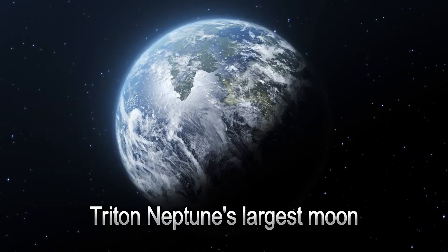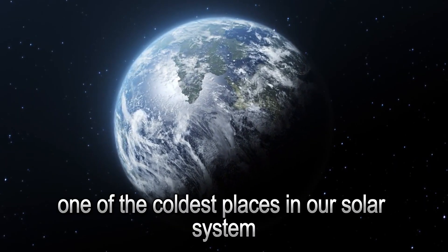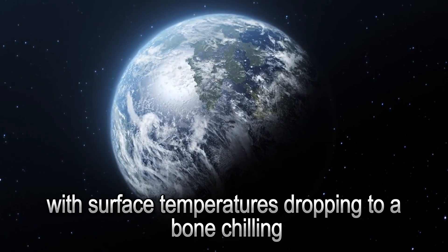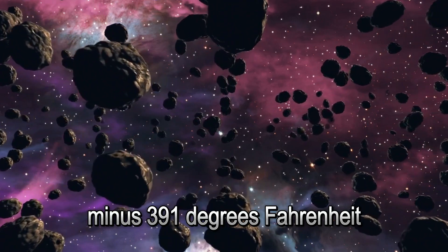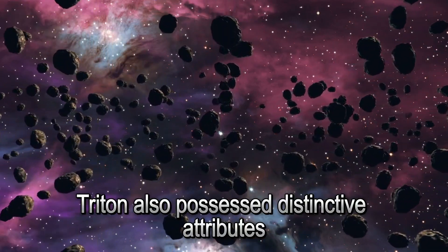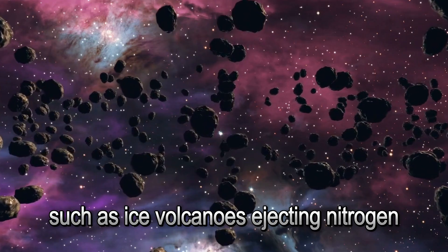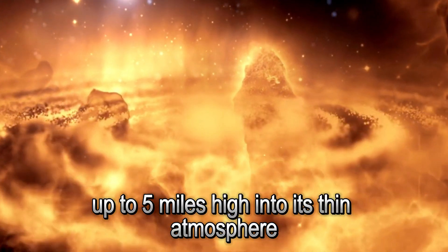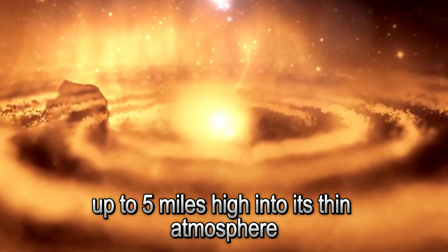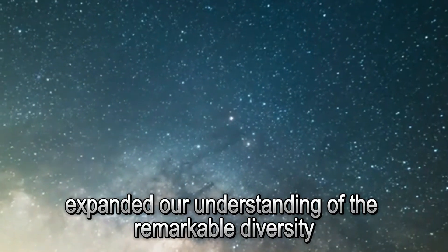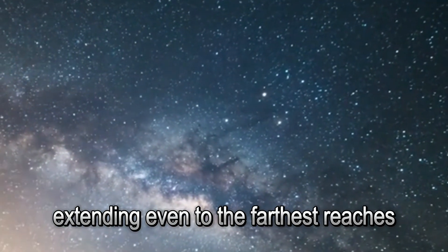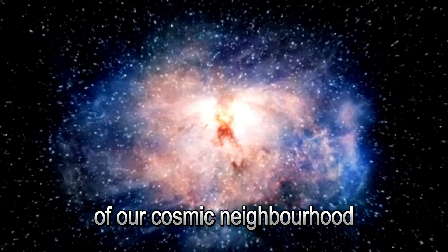Triton, Neptune's largest moon, turned out to be one of the coldest places in our solar system, with surface temperatures dropping to a bone-chilling minus 391 degrees Fahrenheit. Triton also possessed distinctive attributes such as ice volcanoes ejecting nitrogen gas and icy particles up to 5 miles high into its thin atmosphere. These discoveries expanded our understanding of the remarkable diversity and complexity of celestial bodies, extending even to the farthest reaches of our cosmic neighborhood.